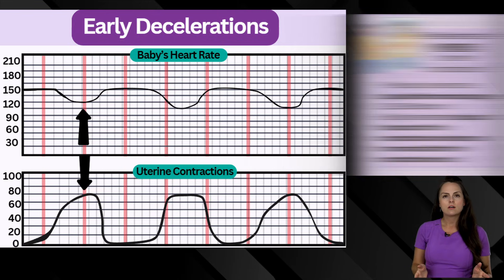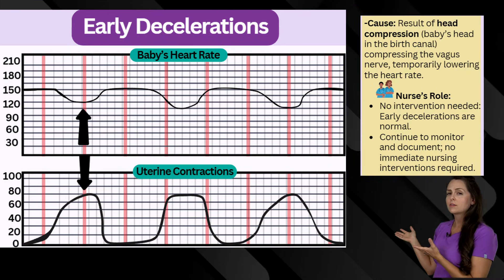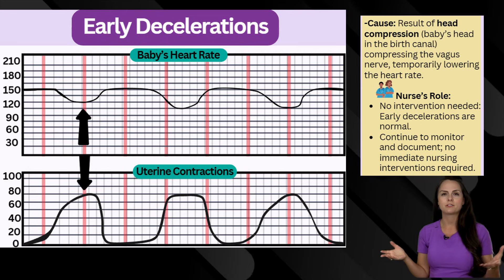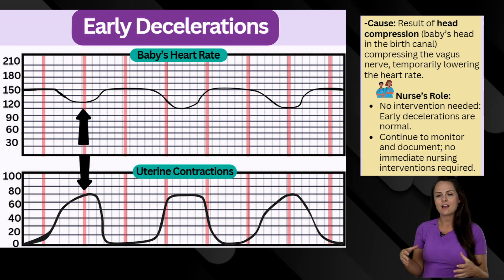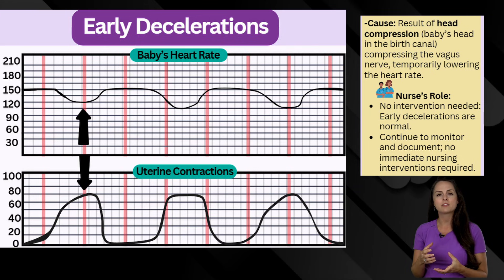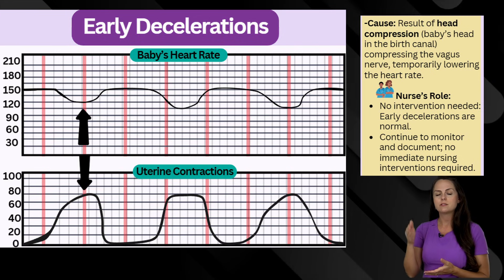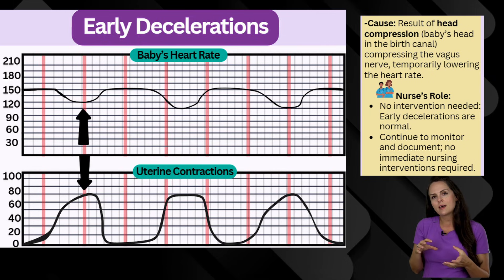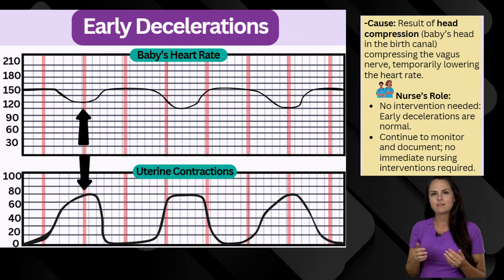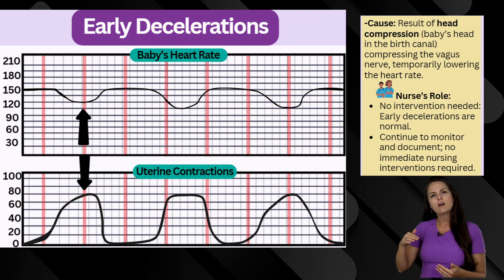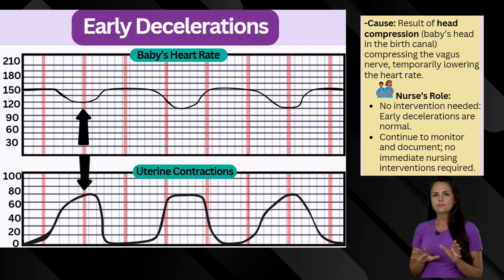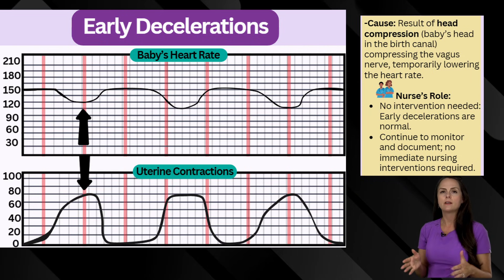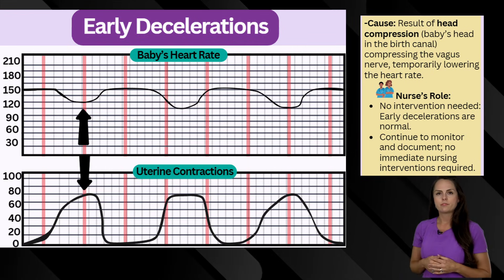What causes this? It results from head compression. The baby's head is in the canal, the contraction is happening and compressing that head, which also compresses the vagus nerve, temporarily causing the heart rate to fall. But once that contraction lets up, it relieves the compression and the vagus nerve is no longer compressed, so the heart rate recovers nicely. There is no intervention needed — you want to continue to monitor and document. Early decelerations are normal.